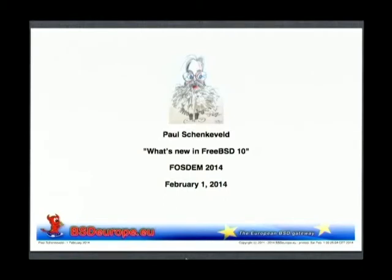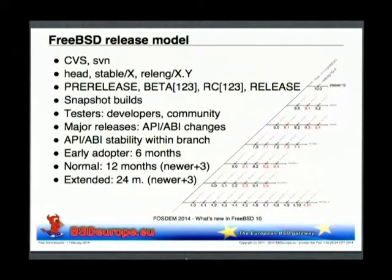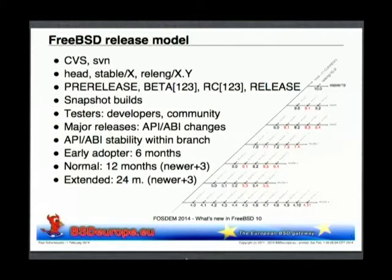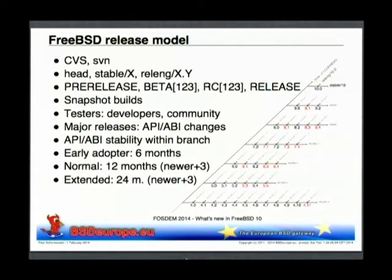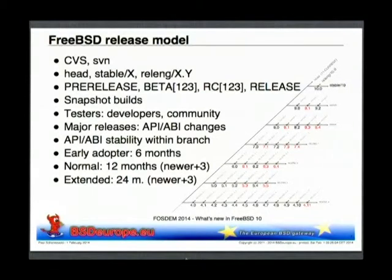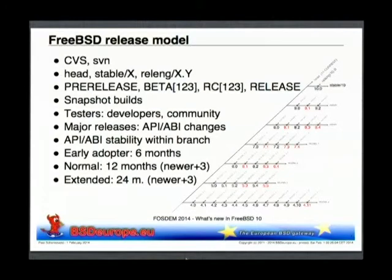FreeBSD release 10 was just released a couple of days ago. I want to give you a little overview of the FreeBSD release engineering model. The picture here shows the way that versions are derived from the FreeBSD repository. The slant line is what we call the head release, or trunk. That's where most of the development takes place, and then every now and then — currently at a pace of about once every two years — we get a new major release.